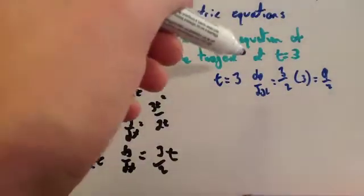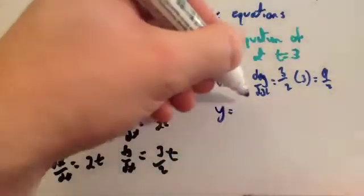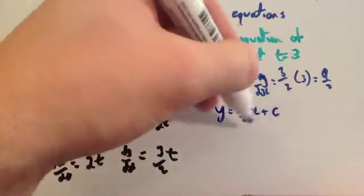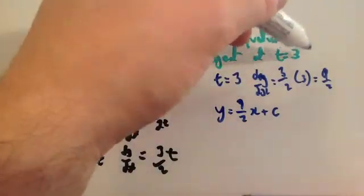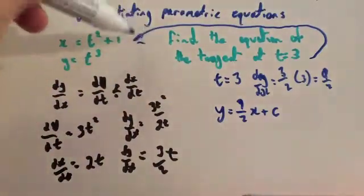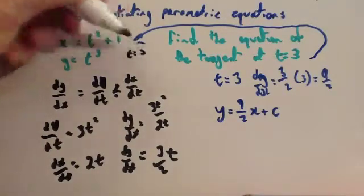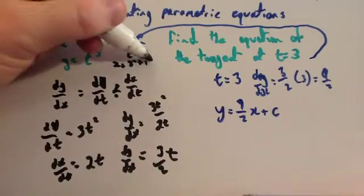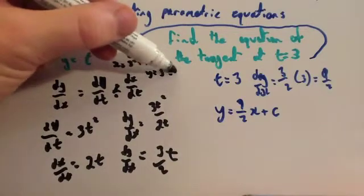We know the gradient so we have y equals 9/2 x plus c. Now we need to find c, so we need the x and y values. To get those, we put t equals 3 back into the parametric equations. When t equals 3, x equals t squared plus 1, which is 3 squared plus 1, equals 10. And y equals t cubed, so it's 3 cubed, which equals 27.